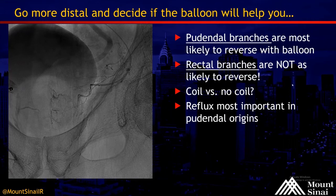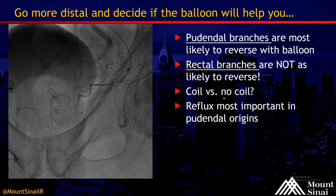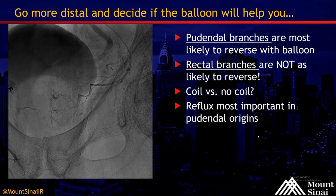In my experience, pudendal branches are most likely to reverse with the balloon. Rectal and vesicular branches can reverse as well, but they are less likely to do so, most likely related to differences in vessel pressure. I have been using coils less frequently, which I think is a good thing when trying to reduce the cost associated with these procedures. Pudendal origins are the most dangerous and challenging because reflux into the penile arteries is probably one of the biggest fears of prostate embolization — patients will have worse outcomes if there are skin changes in the penis, as we've seen in case reports.